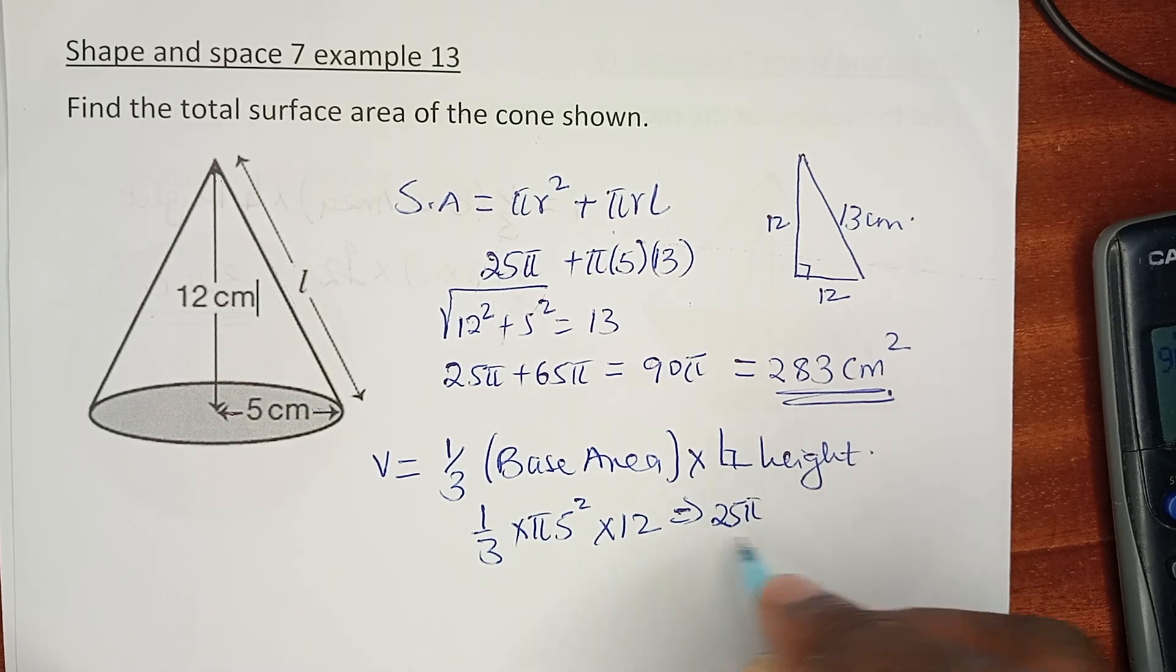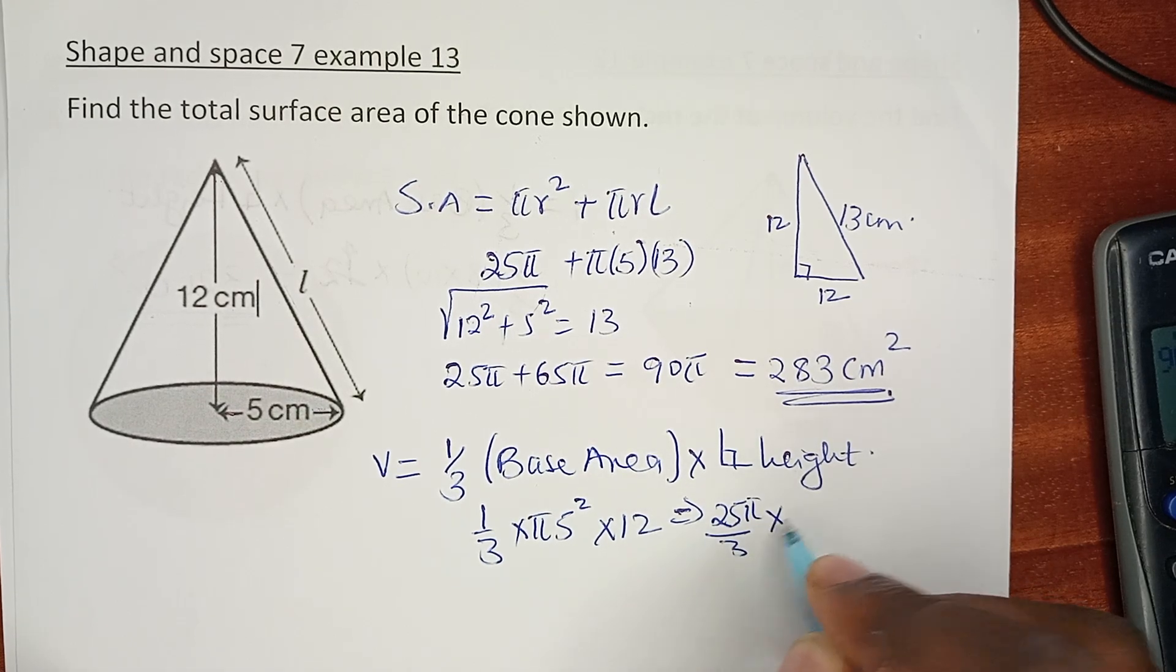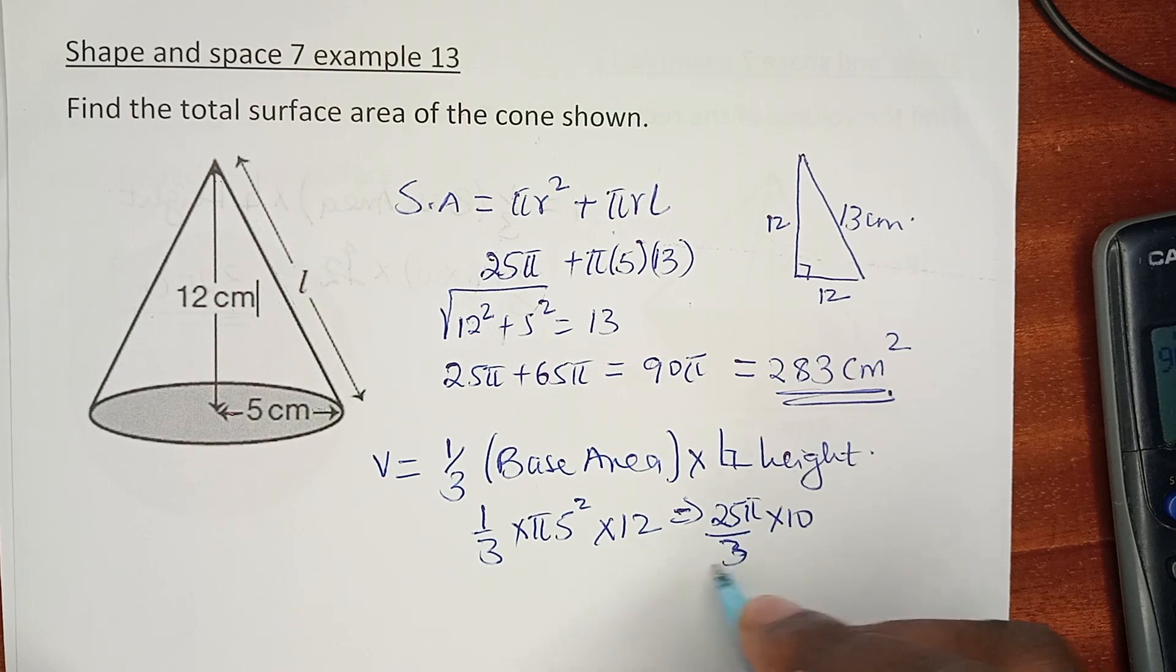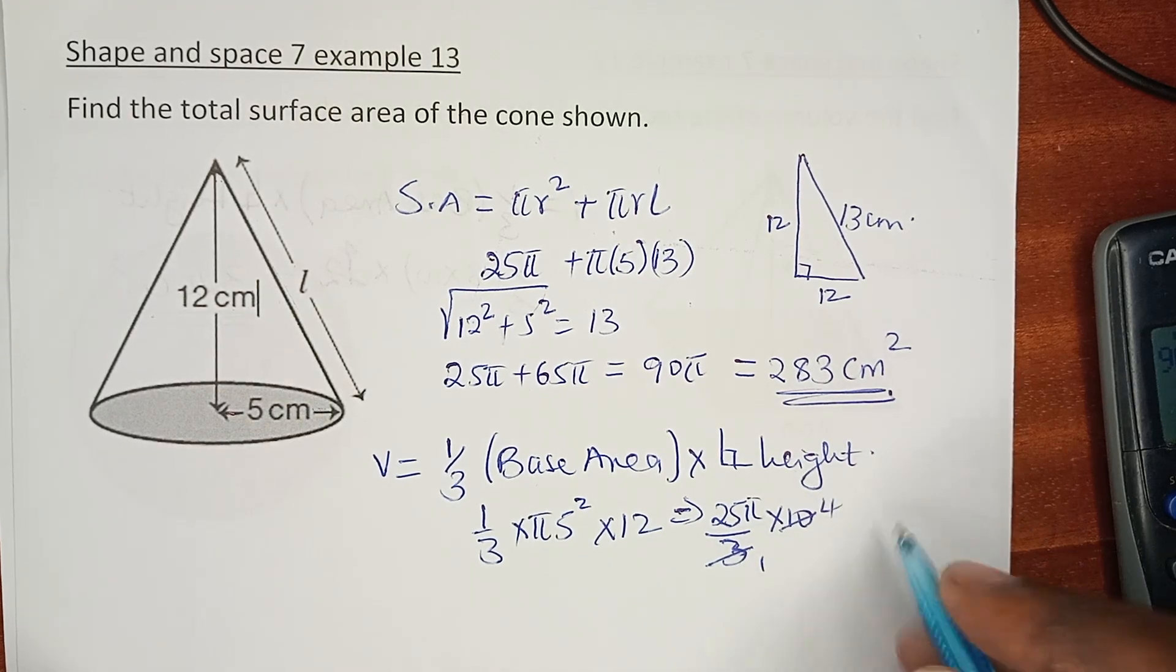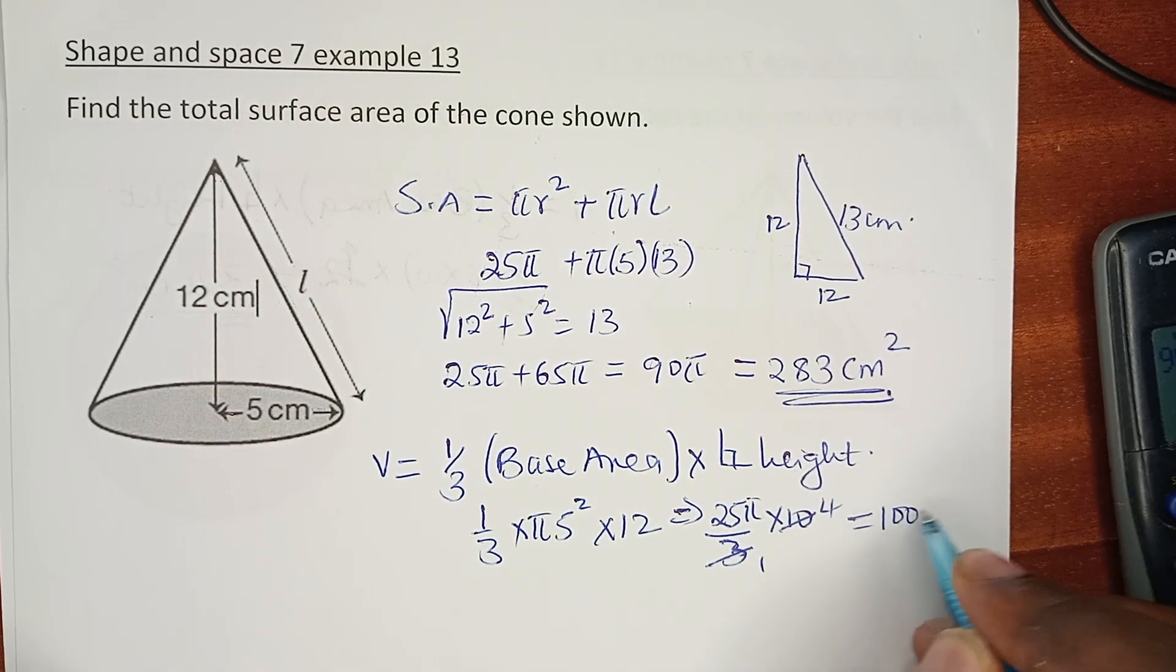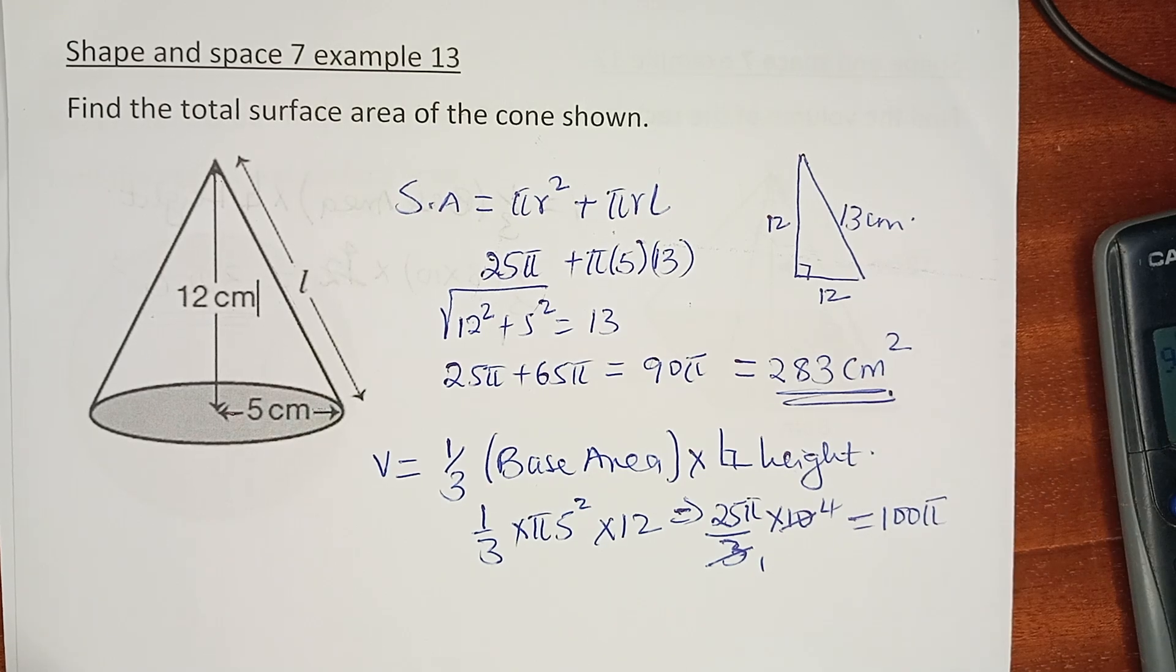25π over 3 times 12. You can see 1/3 of 12 is 4, and this is 100π.